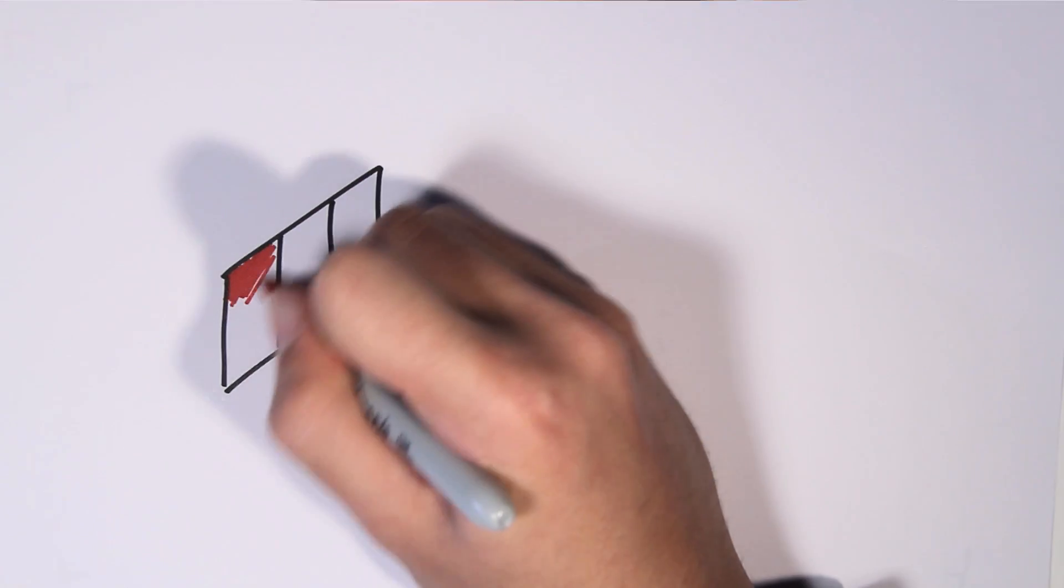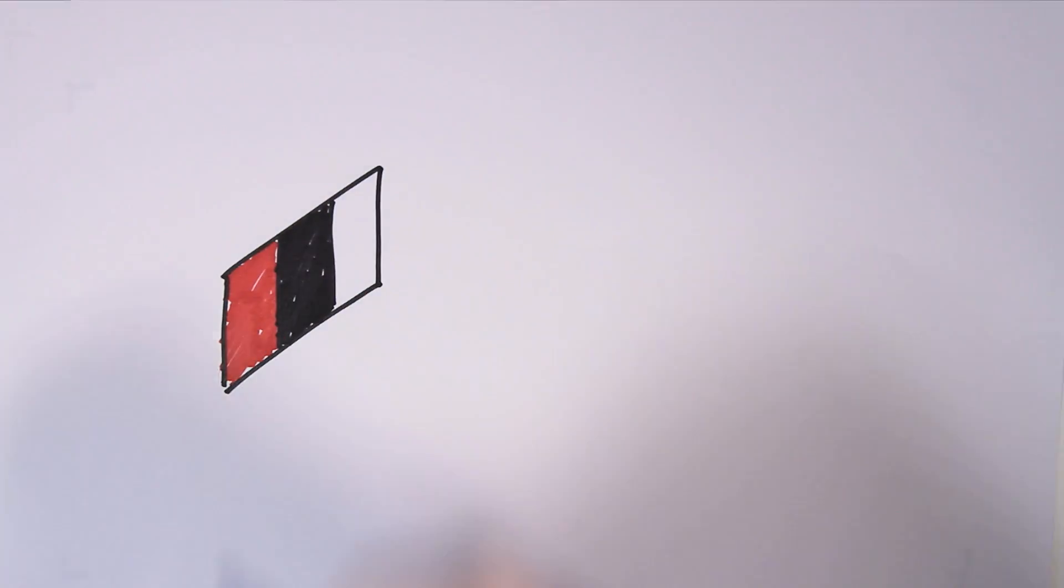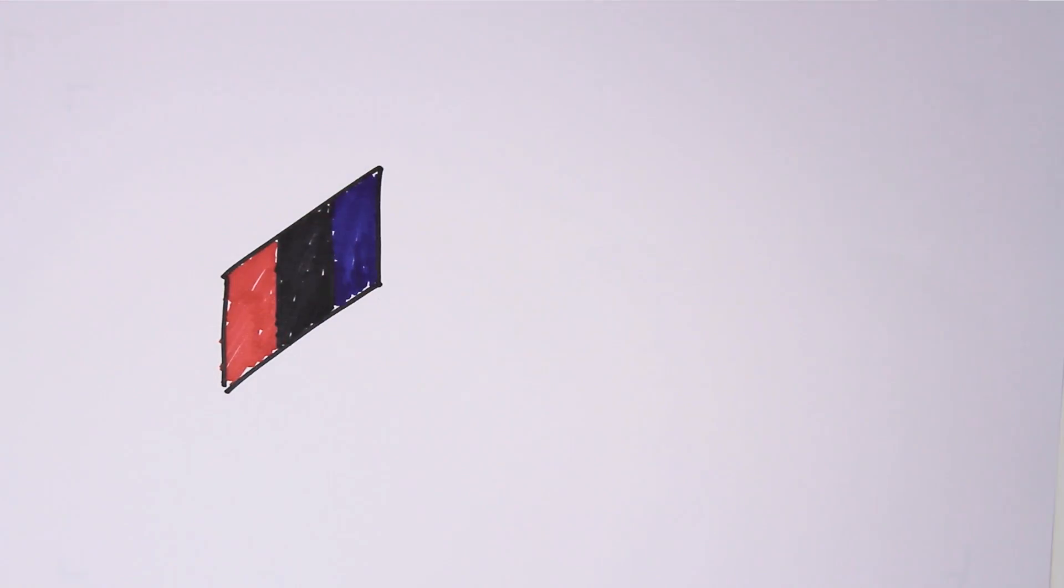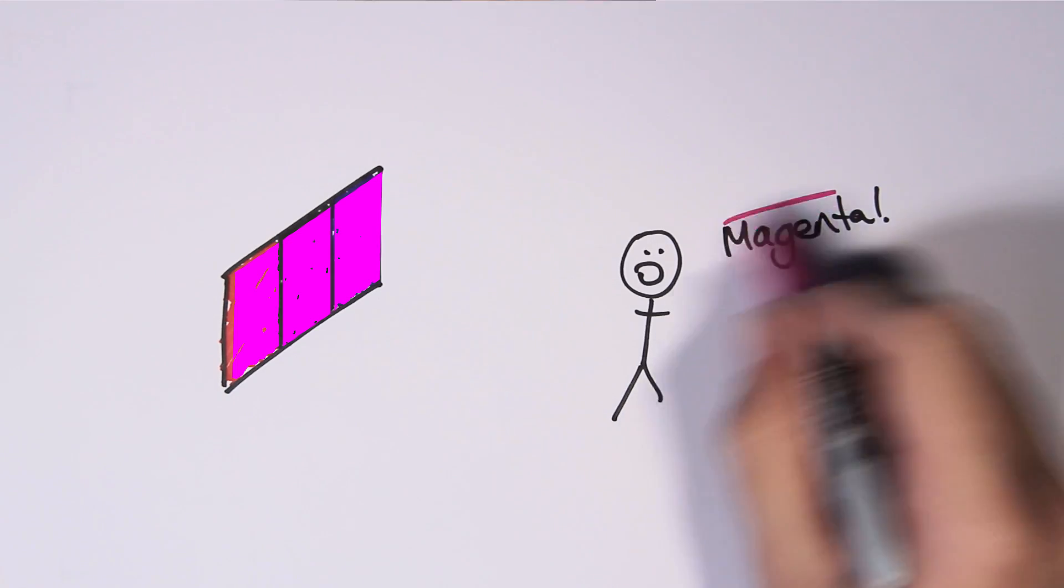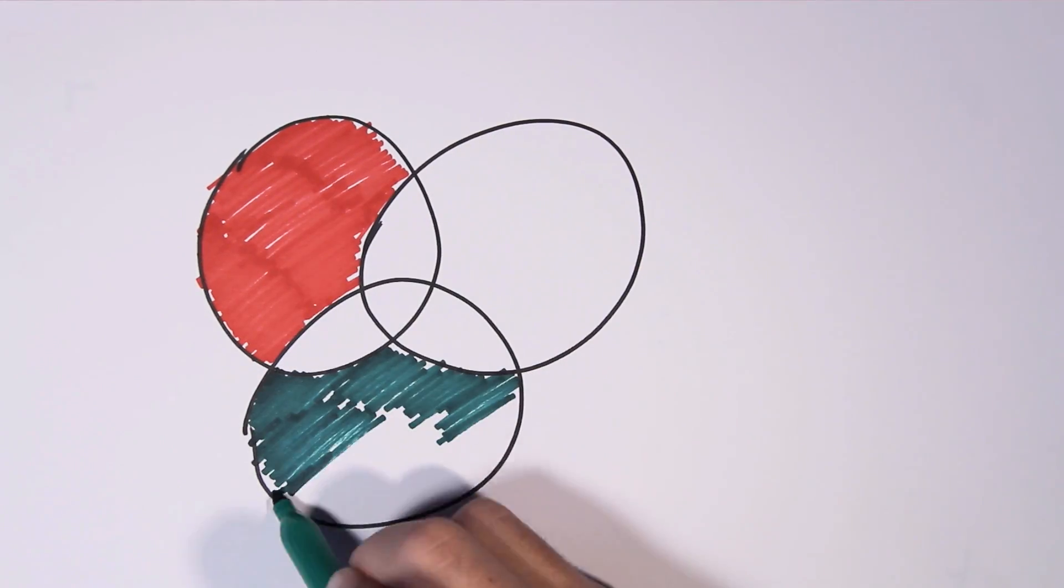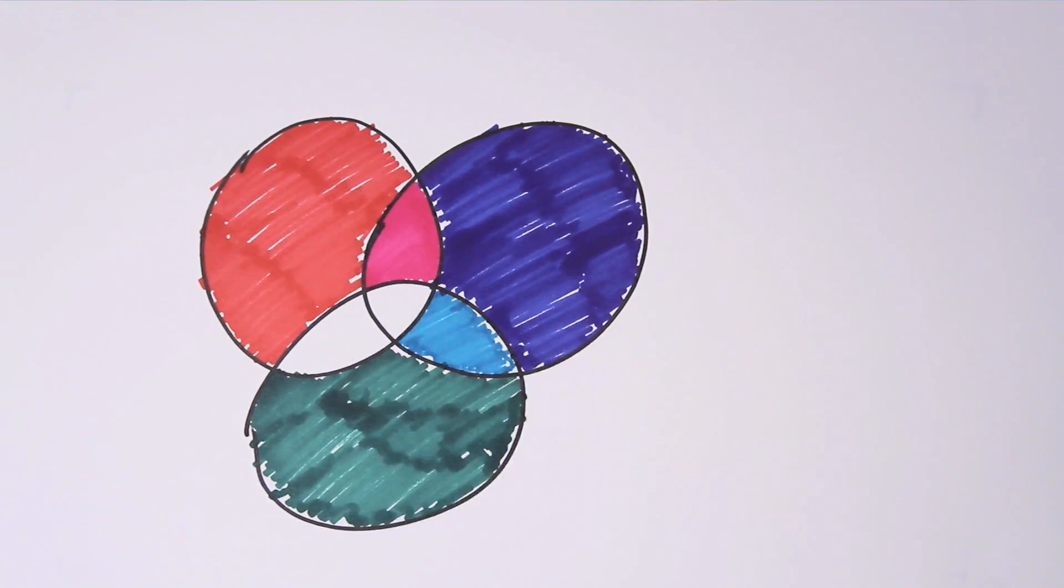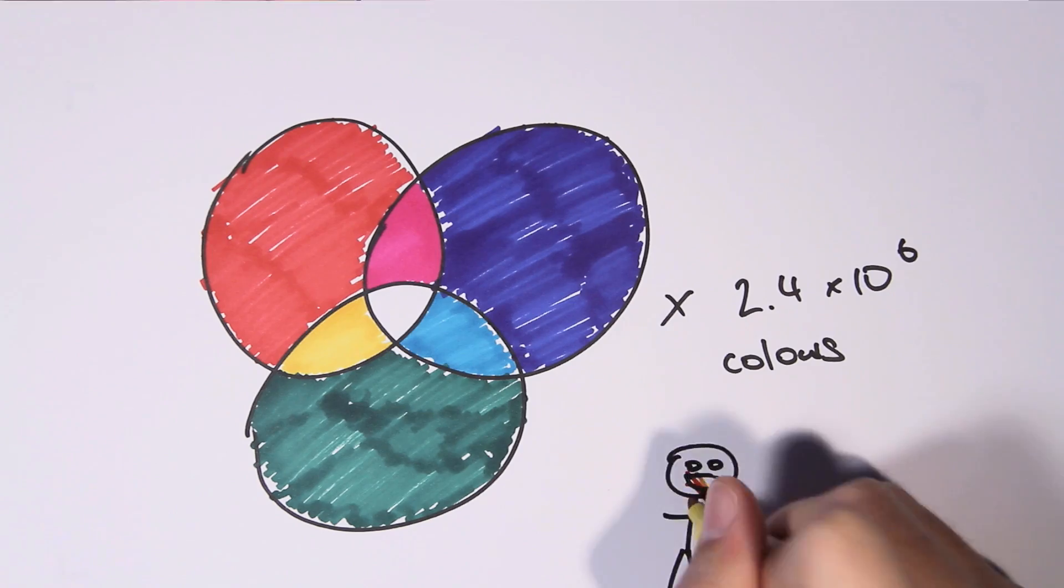If more than one subpixel is on, then the eye blends the colour together to get a new colour. For example, leaving red and blue subpixels on will give magenta. Each subpixel has 256 levels of brightness in most cases, and up to 16.7 million colours can be created by combining various levels of subpixel intensity.